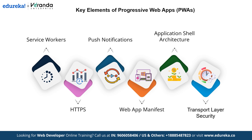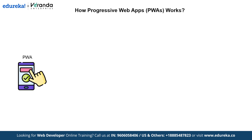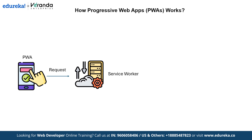Now that we have explored the key features of progressive web apps, let's understand how they work to provide a seamless user experience. Everything starts when the user interacts with a progressive web app on their device - for instance, they might tap on a button or explore a new section. This simple action triggers a request to fetch the required data. Then comes the role of the service worker. Once the request is sent, the service worker takes over - think of it as a behind-the-scenes assistant that steps in to handle the request and decide how to proceed based on whether the user is online or offline.